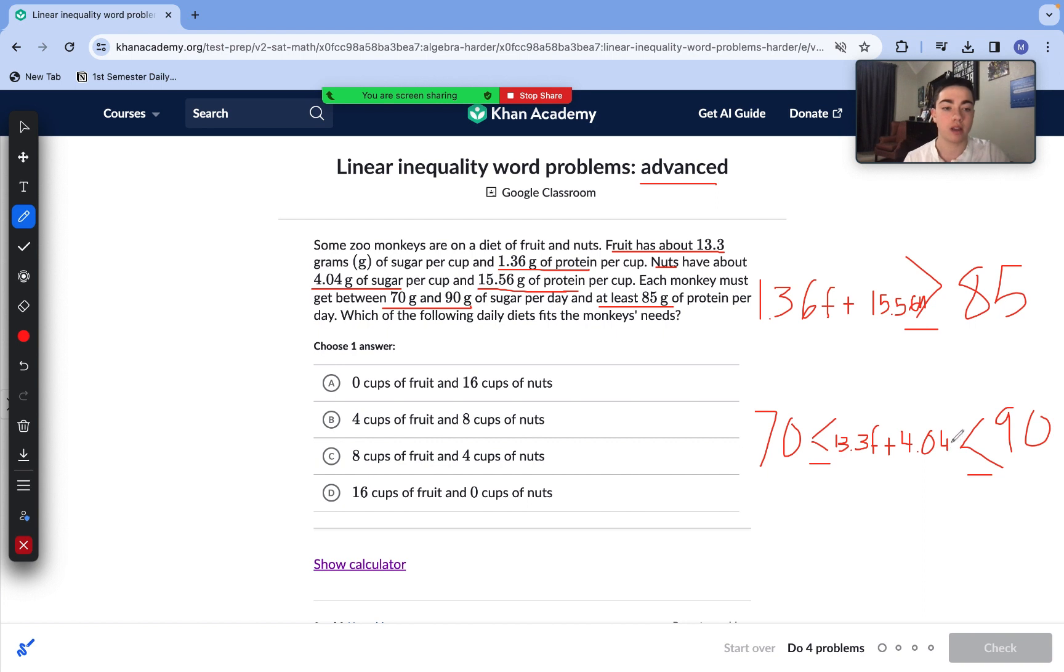Now we are going to see our F and N values from each of these answer choices and then figure out does it fulfill both of these inequalities. We're not going to be taking out incorrect answers where 1 is less than 0. We know that's not true.